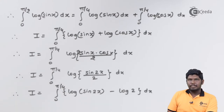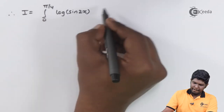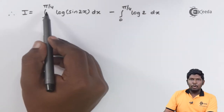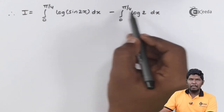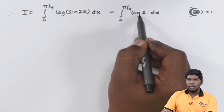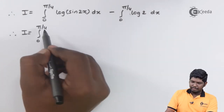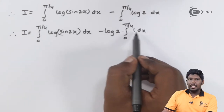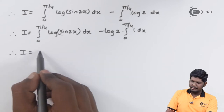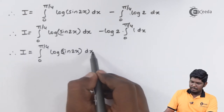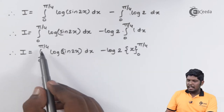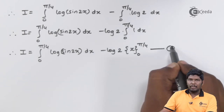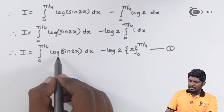Now we separate the integral into both terms. We have the integral from 0 to pi by 4 of log(sin 2x) dx minus the integral from 0 to pi by 4 of log 2 dx. In the second integral, the constant log 2 can be taken outside. Integration of 1 dx gives x, so we get log 2 times x evaluated from 0 to pi by 4. Let us call this equation number one.